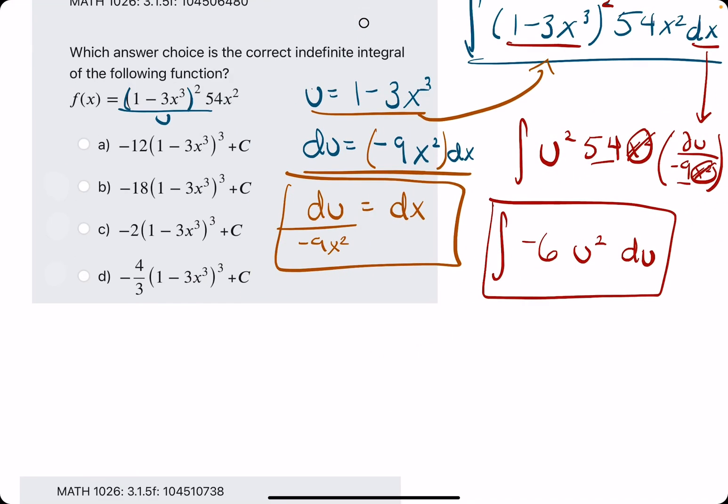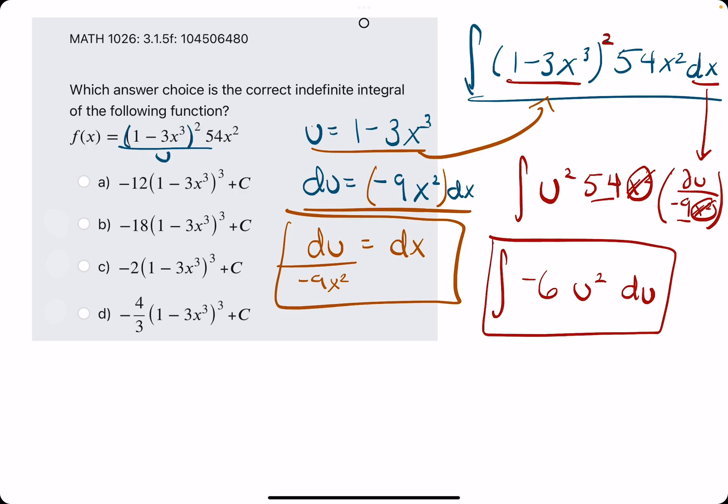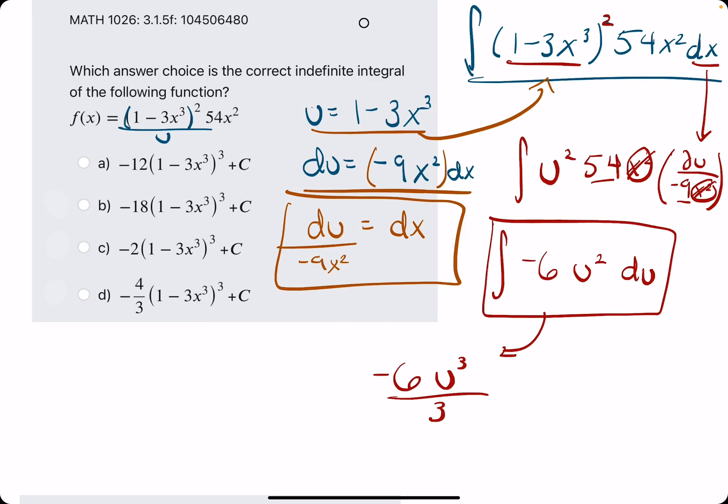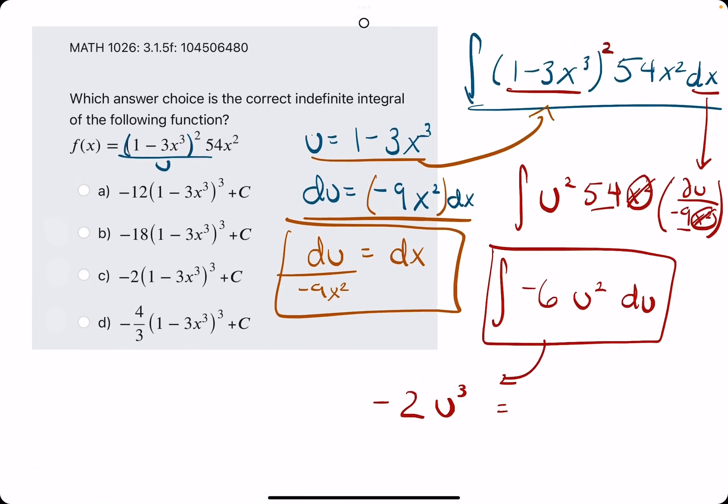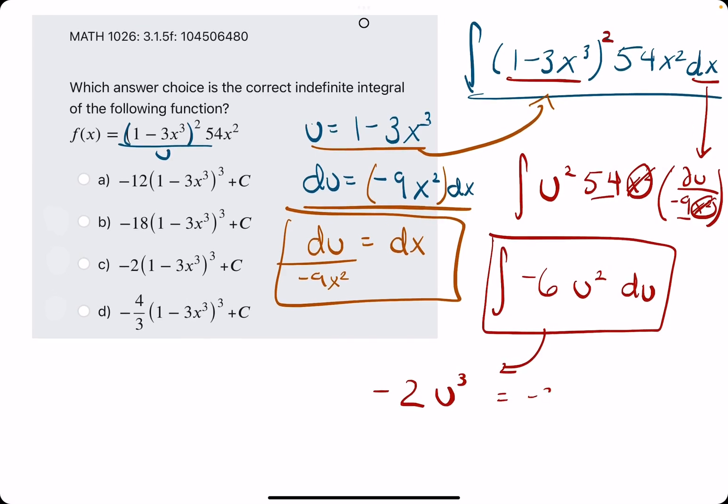We'll keep the u squared and the du. This is the integral we're trying to find, and it's much easier. Now, let's find the antiderivative. We leave the negative 6, keep the u, but we add 1 to the exponent to get u cubed, and then divide by that same number we just found, 3. 6 over 3 is 2, so we have negative 2 u cubed. If we plug in the u back in, we will have negative 2 (1 minus 3x³)³ plus c.